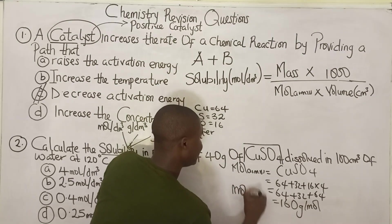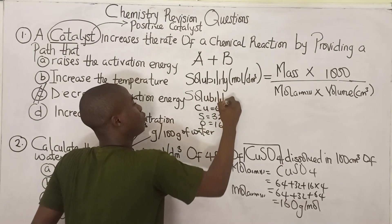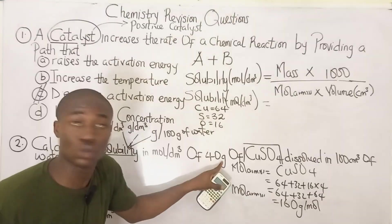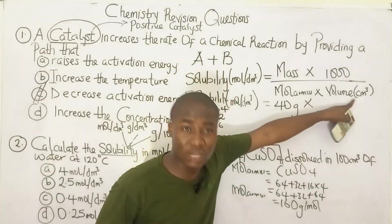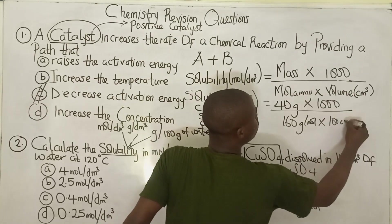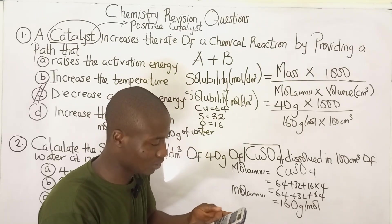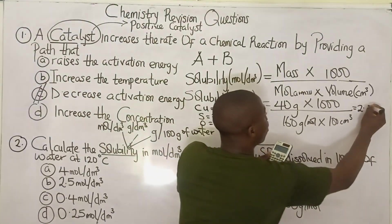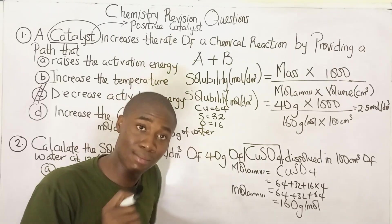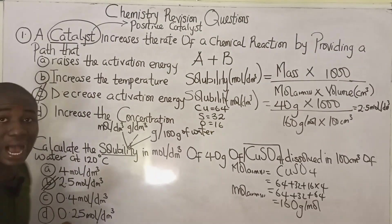The molar mass of CuSO₄ is 160 g/mol. Now solving for solubility in moles per dm³: mass = 40 g, volume = 100 cm³ (so we include 1000), molar mass = 160 g/mol. Solubility = (40 × 1000) / (160 × 100) = 2.5 mol/dm³. The answer is option B: 2.5 moles per dm³. Make sure you have your calculator and writing materials ready.